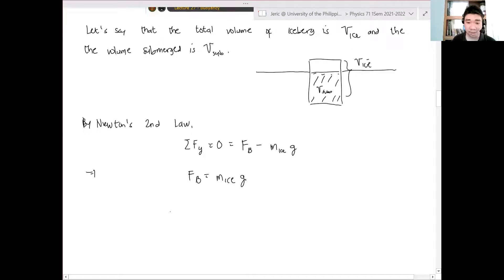This just means that the total buoyant force is equal to the mass of ice times acceleration due to gravity. And we know that the buoyant force is just equal to density of the seawater, volume of the submerged times g.